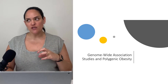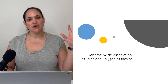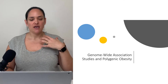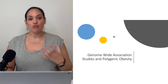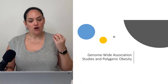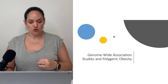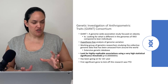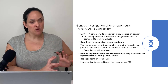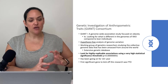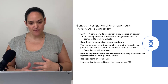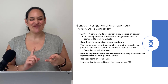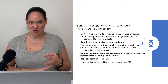What's really kind of blown the lid off of this concept and helped us learn a lot more is this newer approach called genome-wide association studies. And the biggest genome-wide association study associated specifically with obesity is something called the GIANT Consortium — GIANT standing for Genetic Investigation of Anthropometric Traits.